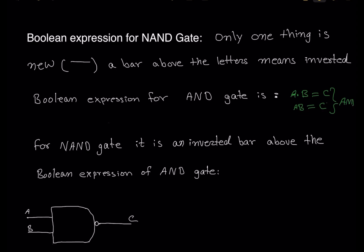For the NAND gate, we use the same dot function — the multiplication dot — but we invert it with a bar above it. So if you add a bar above A dot B, that becomes a NAND gate, because it's AND but that bar means NOT. So NOT AND gate becomes NAND gate. The first N in NAND is NOT — it is an inverted bar above the Boolean expression of the AND gate.